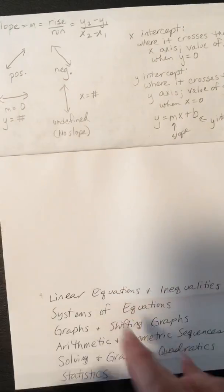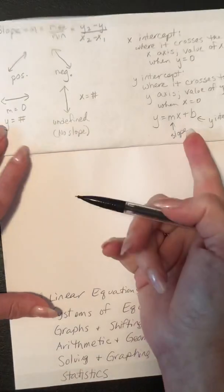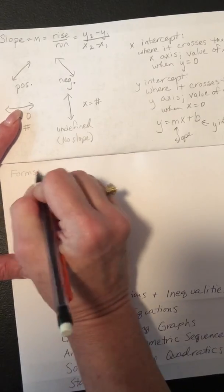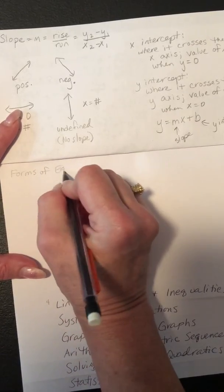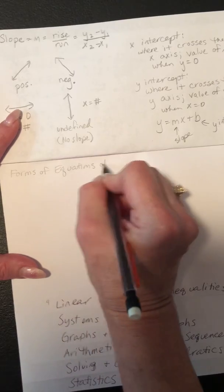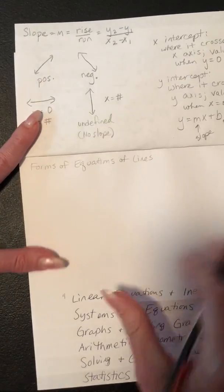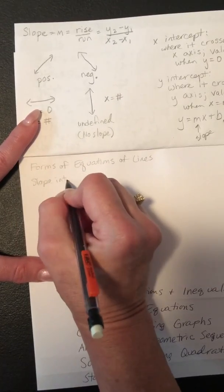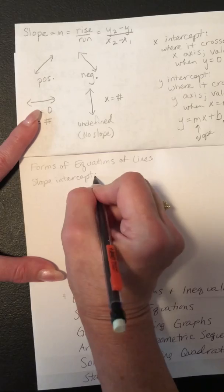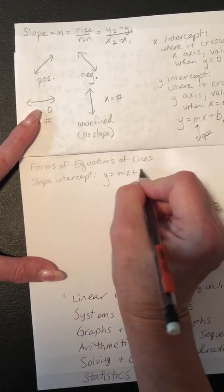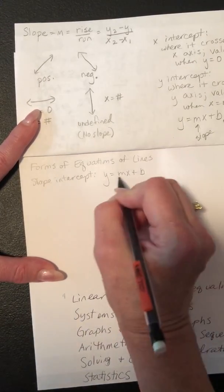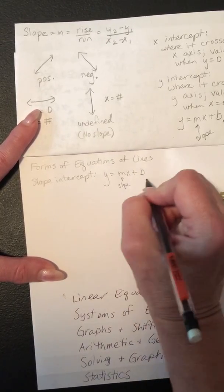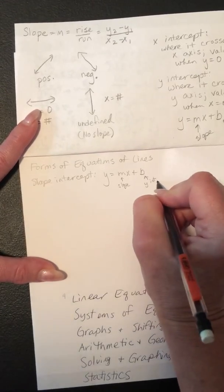So, there are three different forms of equations of lines. The easiest form is, which a lot of y'all like to do, is called slope-intercept, which we just talked about. And that's just y equals mx plus b. And again, we already talked about that this is the slope, and this is the y-intercept.